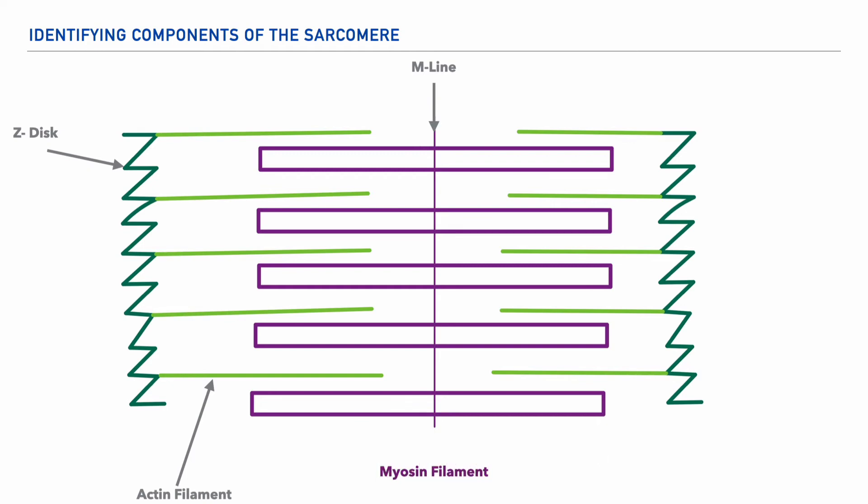Now, following this, we have other sections to make note of too. The space within the interior of our sarcomere, specifically the space that shows only the actin filament, is referred to as the I-band.